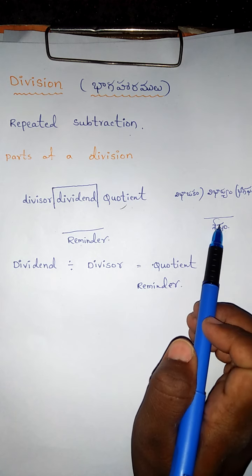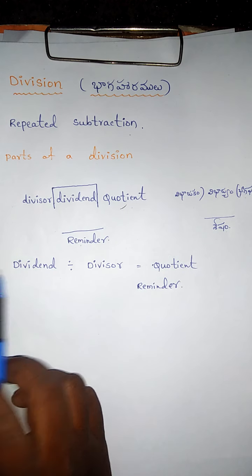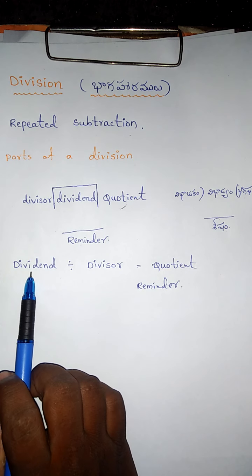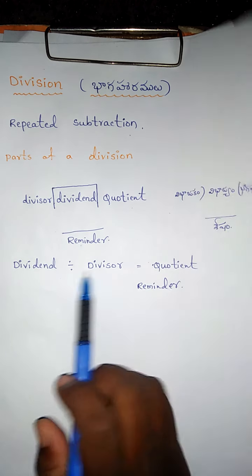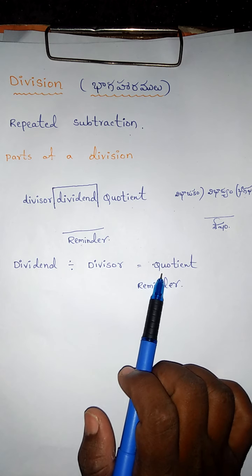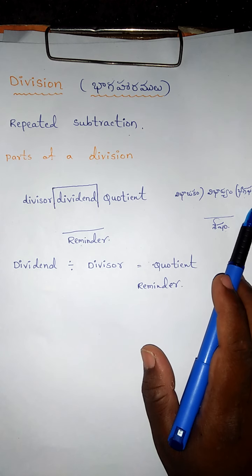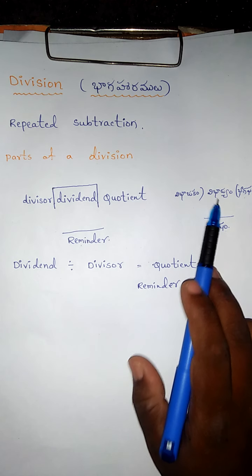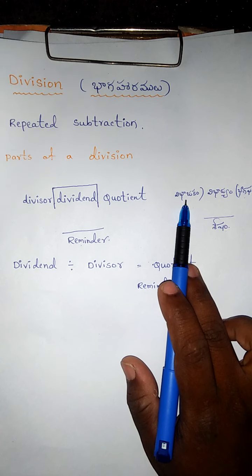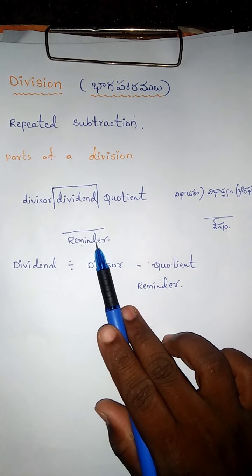The parts of division are: dividend, divisor, quotient, and remainder. In Telugu these are called Bhajyam, Bhajaka, Bhagaphalam, and Shesham. The definition of division is: dividend divided by divisor to find quotient. Sometimes we will get a remainder also.